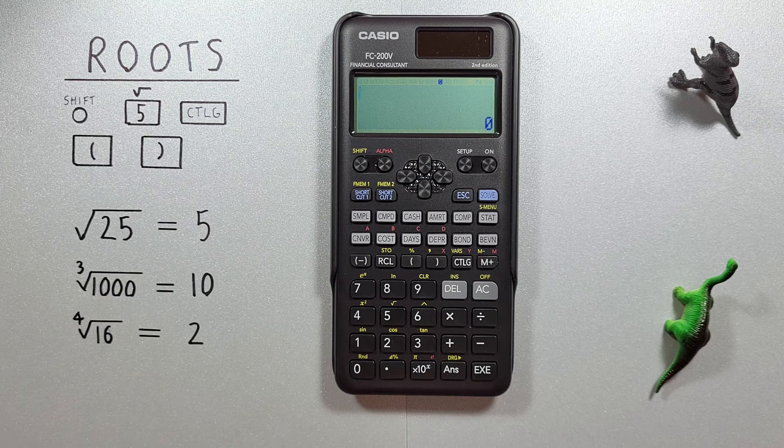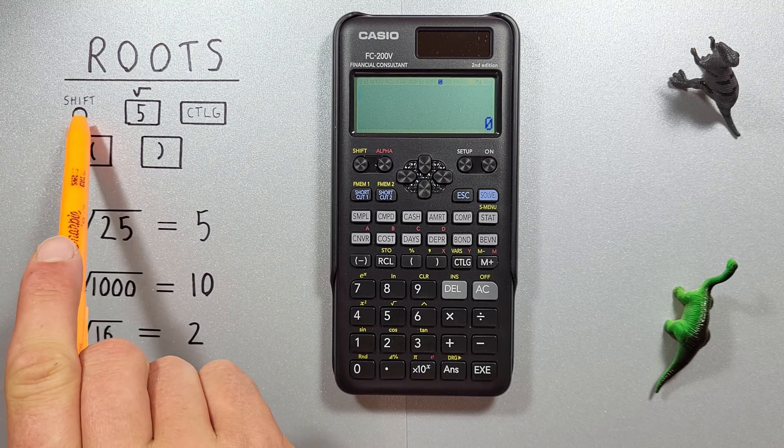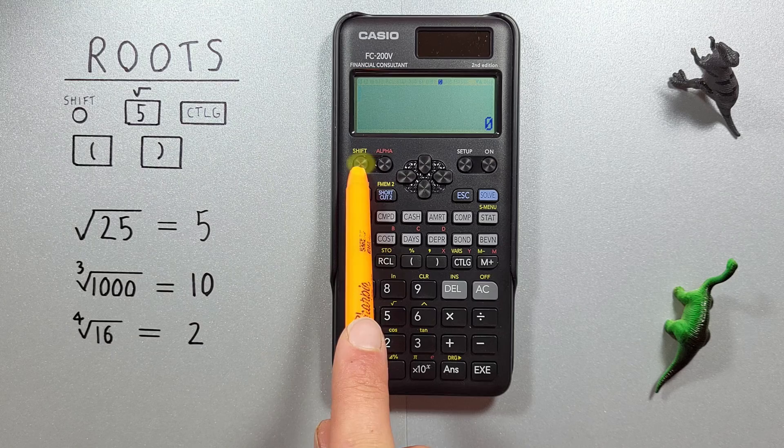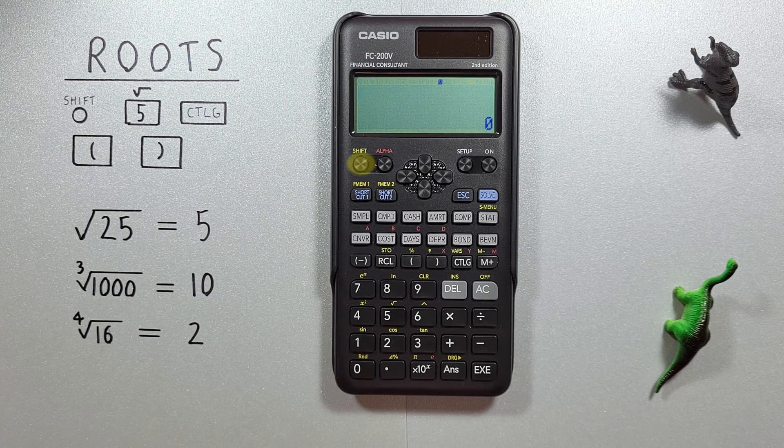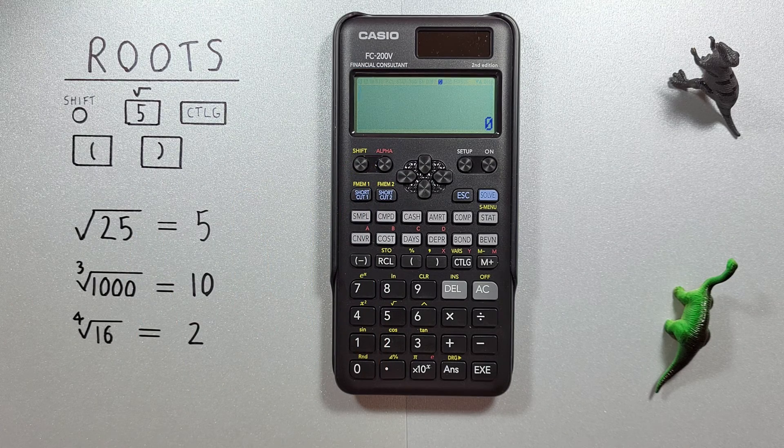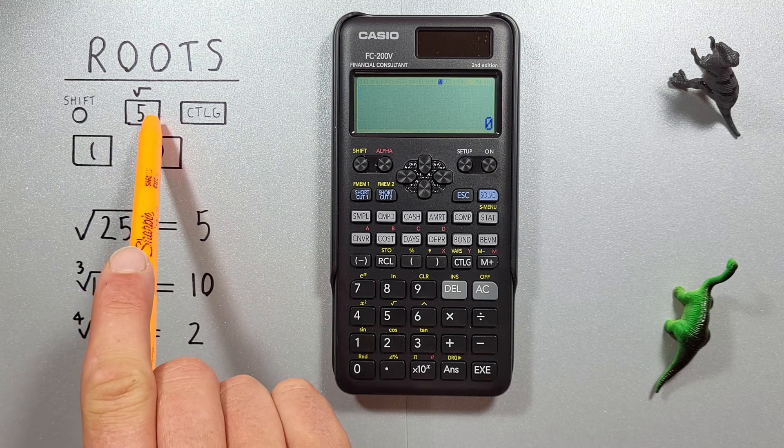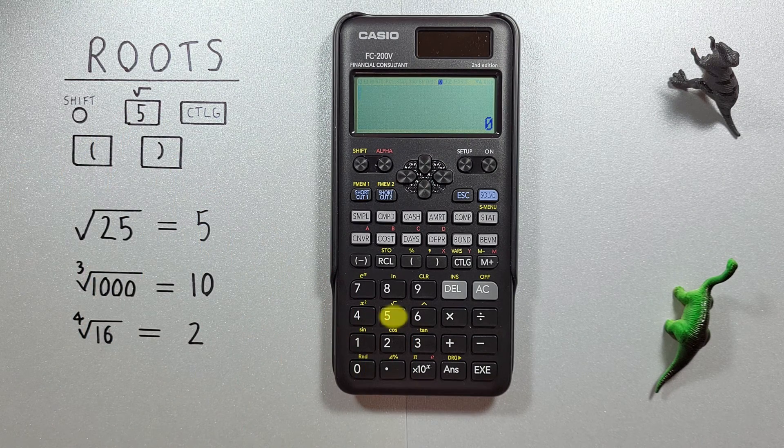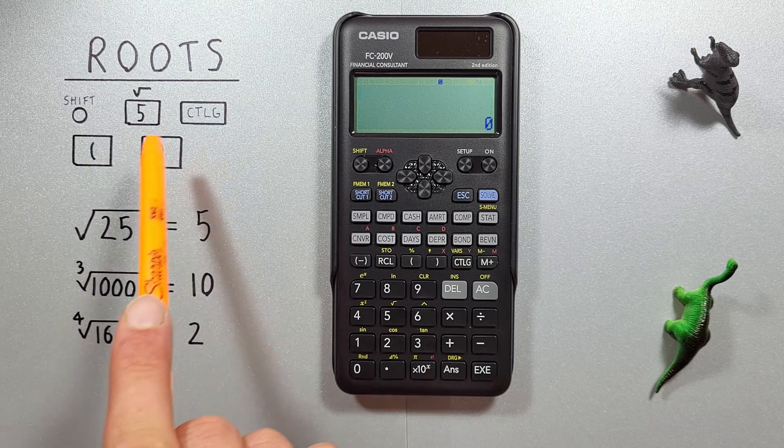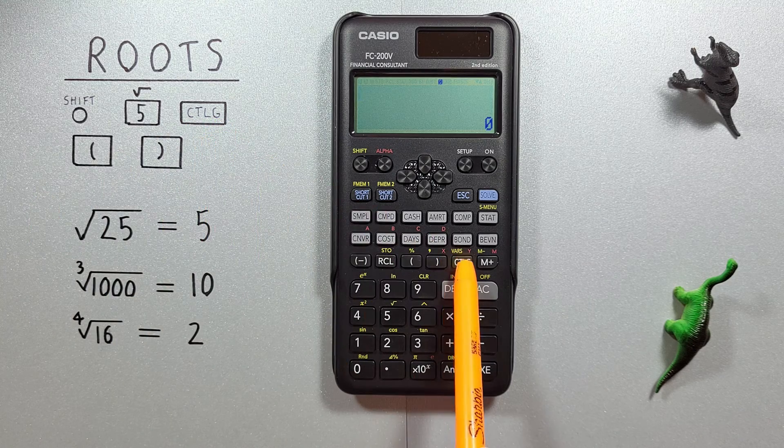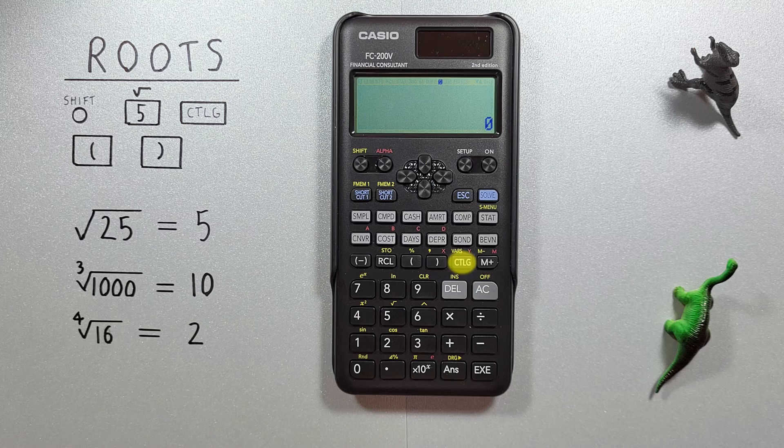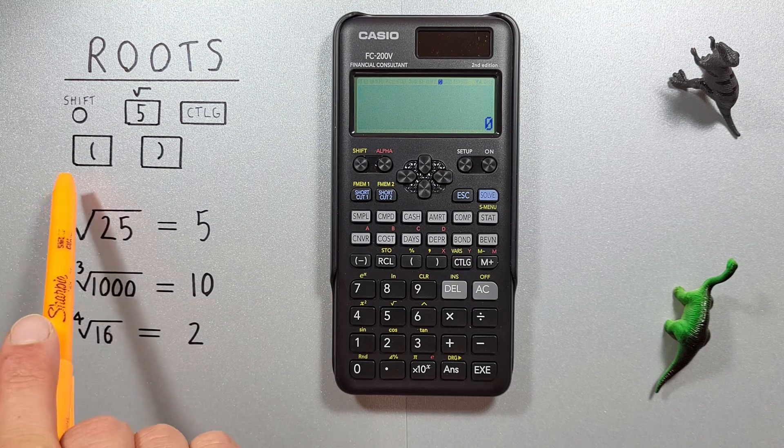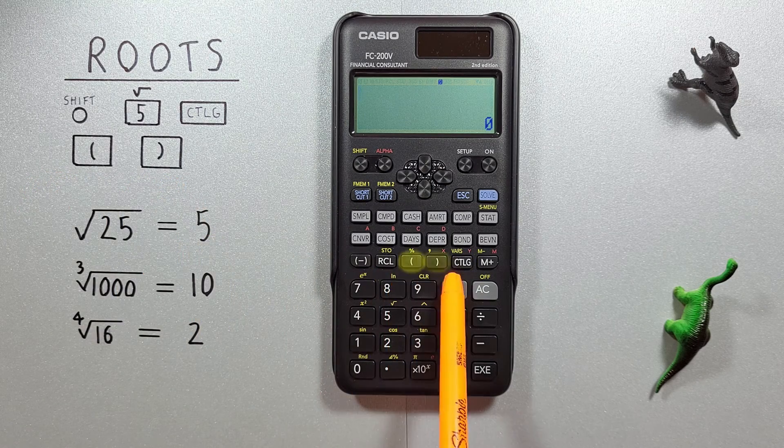To do this, we'll use the shift key that looks like this, located here. The 5 key with the shift function of square root that looks like this, located here. The catalog key that looks like this, located here. And the bracket keys that look like this, located here.